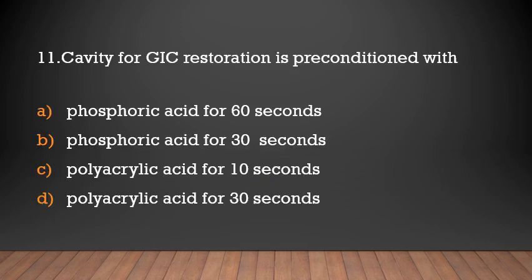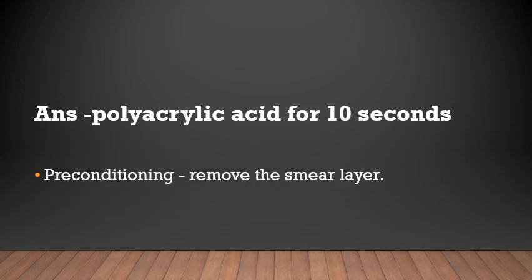Cavity for GIC restoration is preconditioned with: (a) phosphoric acid for 60 seconds, (b) phosphoric acid for 30 seconds, (c) polyacrylic acid for 10 seconds, (d) polyacrylic acid for 30 seconds. Answer: Polyacrylic acid for 10 seconds. Preconditioning of GIC restoration removes the smear layer.